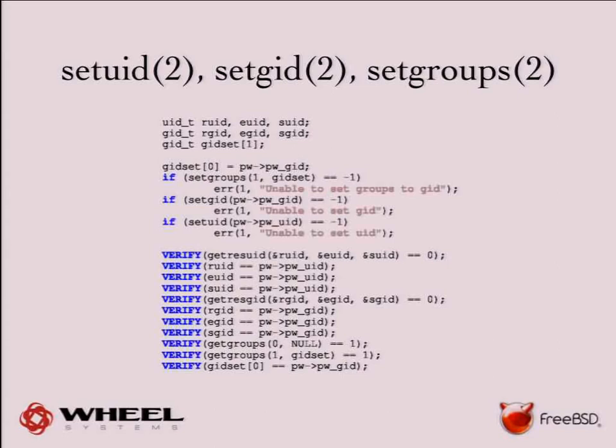The correct order for credential dropping should be: drop all supplementary groups, set the group ID, set the user ID, verify all those operations, and then verify them again just to be sure.